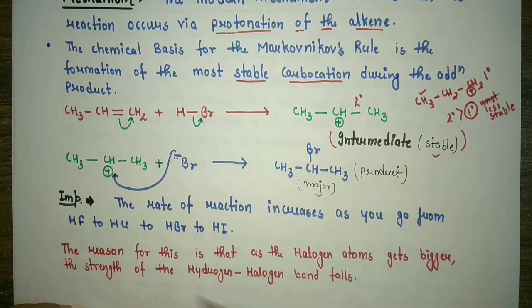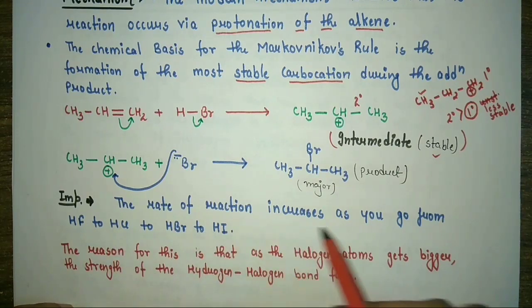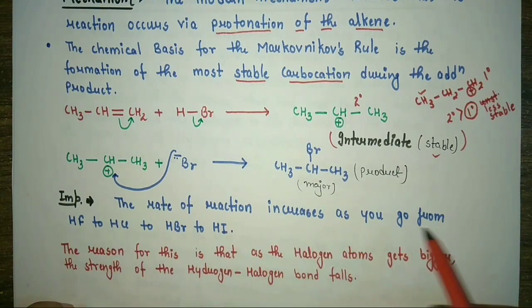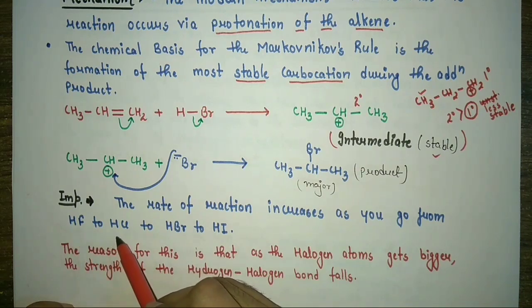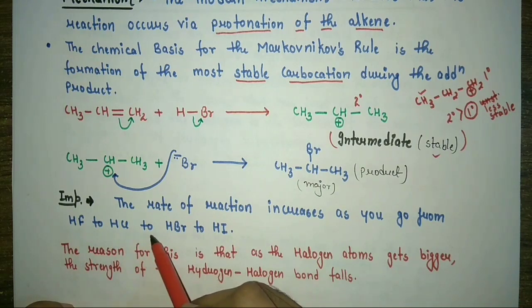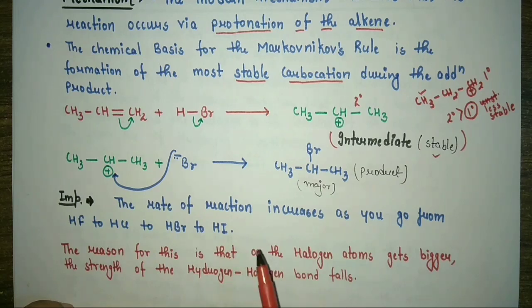It is important to note that the rate of reaction increases as you go from HF to HCl to HBr to HI.